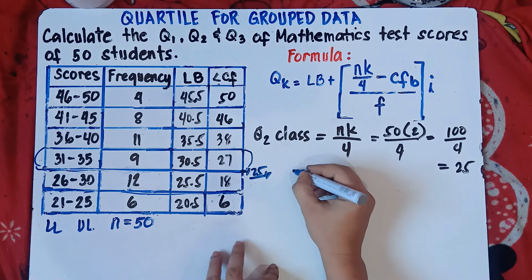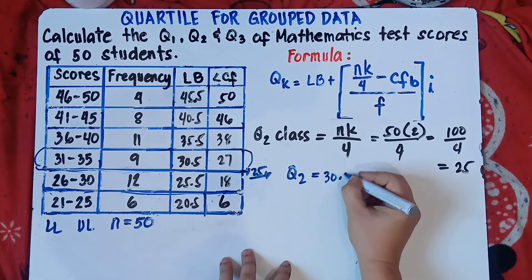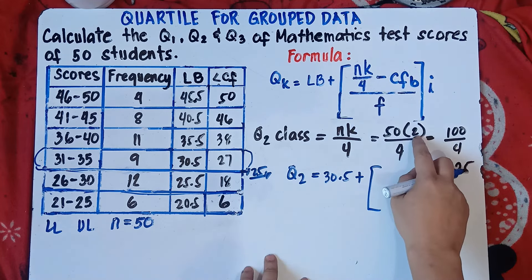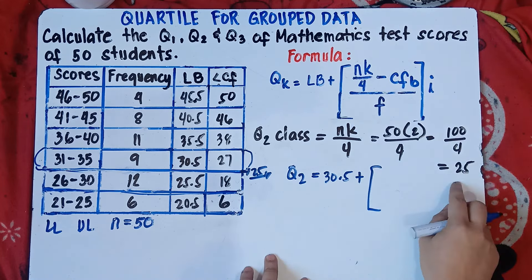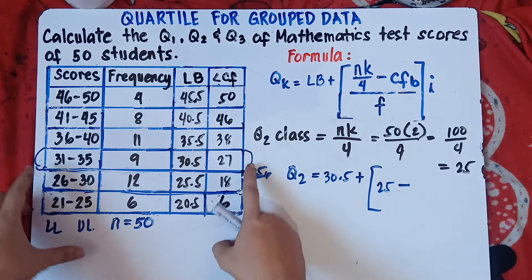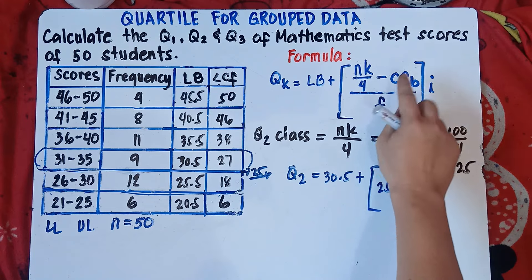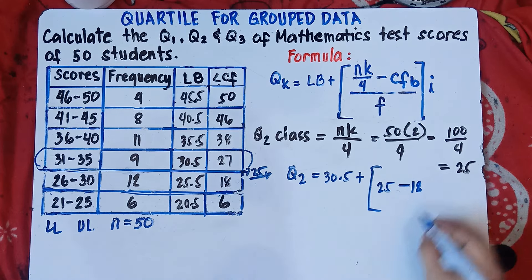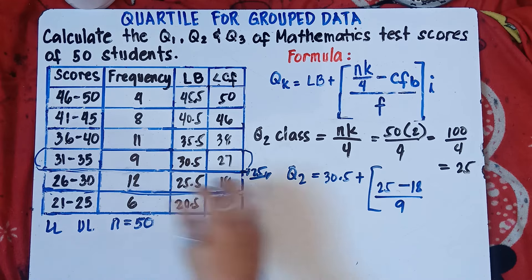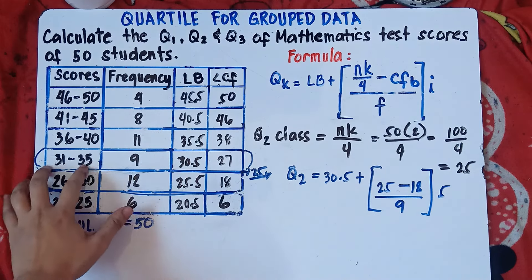Q2 equals LB of the second quartile class, which is 30.5, plus bracket NK over 4 — that is 25 — minus CFB, which is 18 (the cumulative frequency before this class), all over F which is 9 (frequency of the second quartile class), times interval I which is 5.